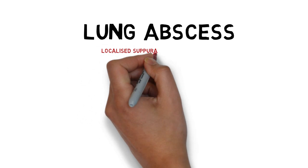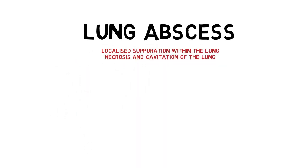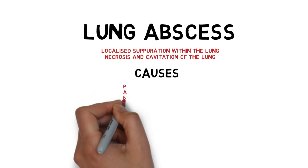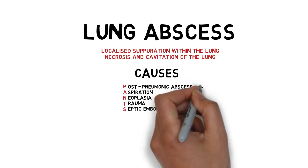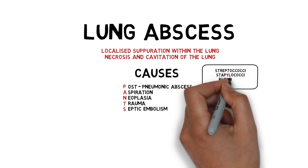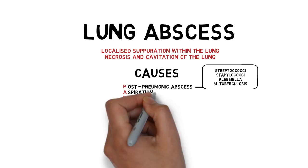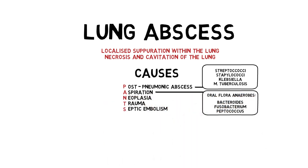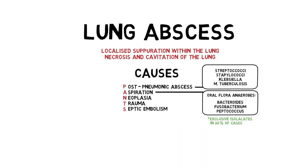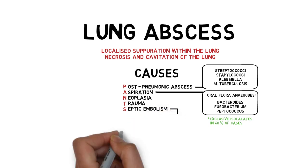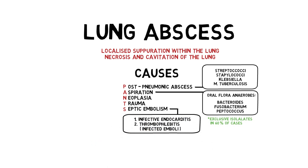Lung abscess is a localised suppuration within the lung characterized by necrosis and cavitation. Organisms that commonly cause abscess following pneumonia are Streptococcus, Staphylococcus, Klebsiella, and tuberculosis. If it is due to aspiration, we need to think of oral flora anaerobes, which are exclusively isolated in 60% of cases. We also need to think of non-infective causes such as lung cancer or penetrating traumatic injury, and the possibility of septic embolism, commonly from tricuspid bacterial endocarditis or infected thrombophlebitis.